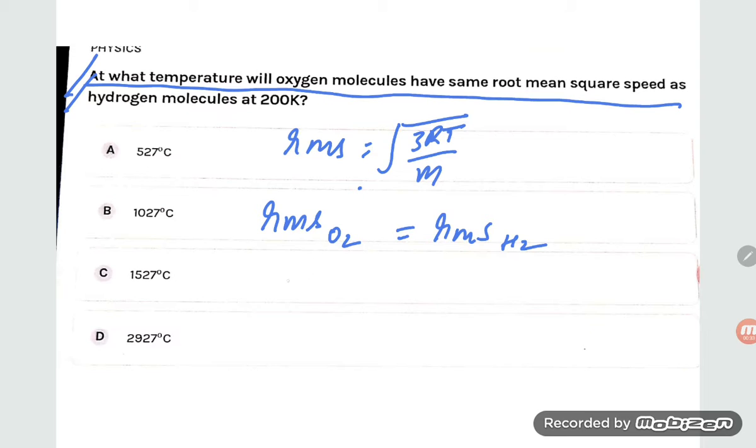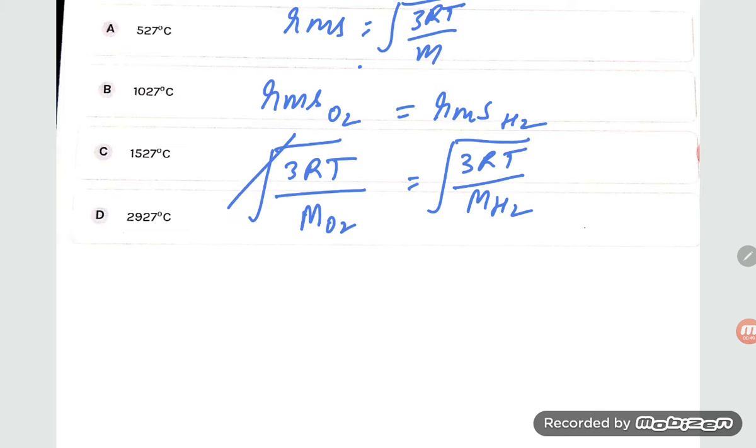So RMS O2 means square root of 3RT by molecular mass of O2 is equal to square root of 3RT by MH2. So see, root root will be cancelled out, 3 will be cancelled out, R will be cancelled out.